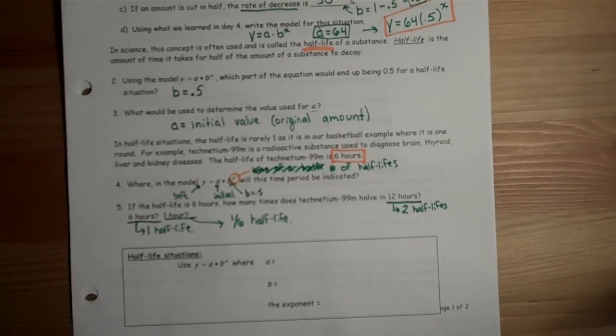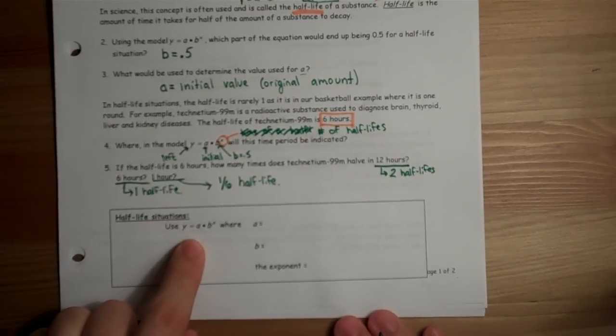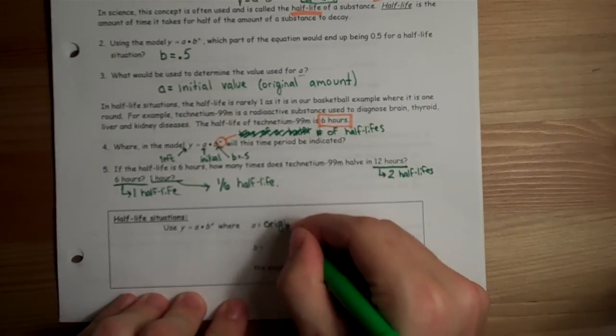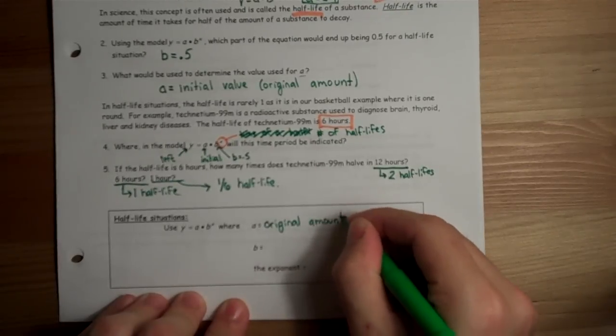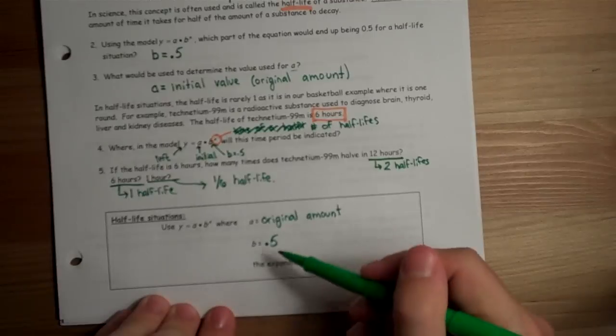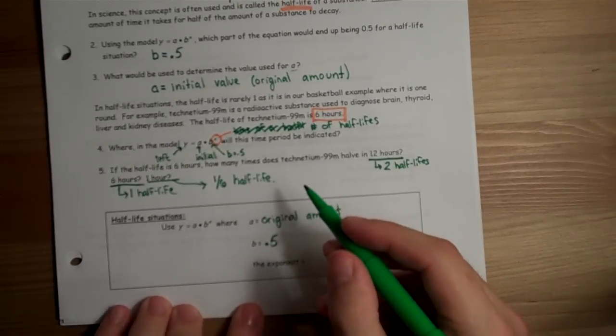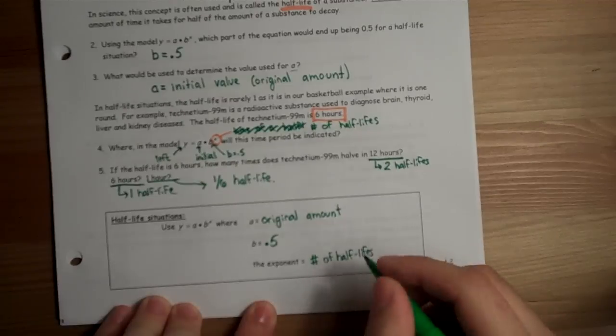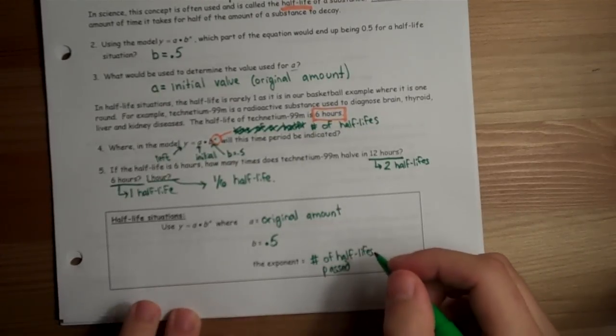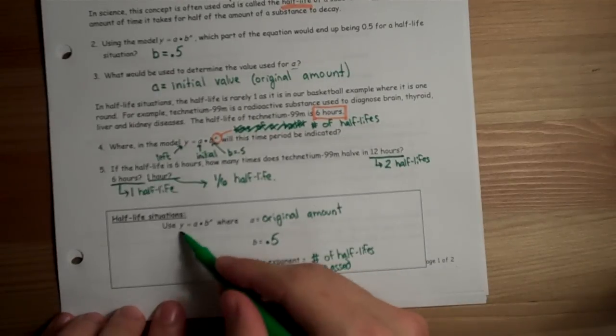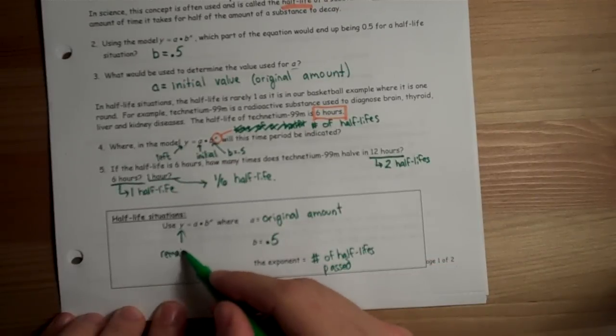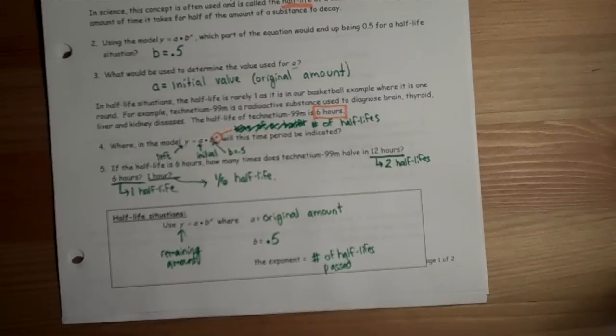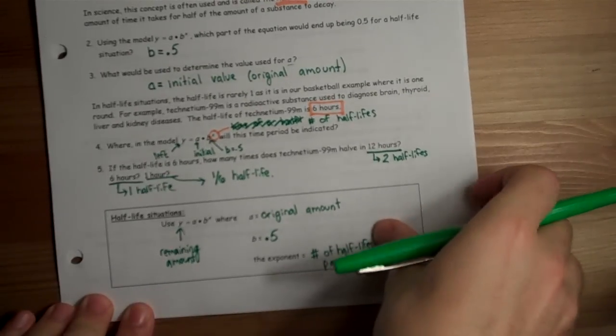All right, we can use all that information here in just a second. Let's summarize what we've done so far. To use our half-life situation, we use our normal y equals a times b to the x, where a is going to stand for the original amount of the chemical. b will always be 0.5, because if we're talking about half-life, we're talking about decaying half as much. And our exponent is always going to stand for the number of half-lives passed. And one important thing to maybe point out here that's not written on our notes is that y is going to stand for the remaining amount. All right, let's go ahead and flip this over to the back, and we'll do a couple problems with the half-life.